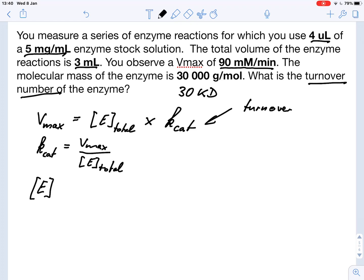Now we know that we have a certain amount of grams in our 3 milliliters. So we can easily calculate that. The grams of enzyme in 3 milliliters would be 5 times 10 to the minus 3 grams per milliliter—that's the milligrams, the 10 to the minus 3 divided by milliliter—times 1 times 10 to the minus 3 liters.